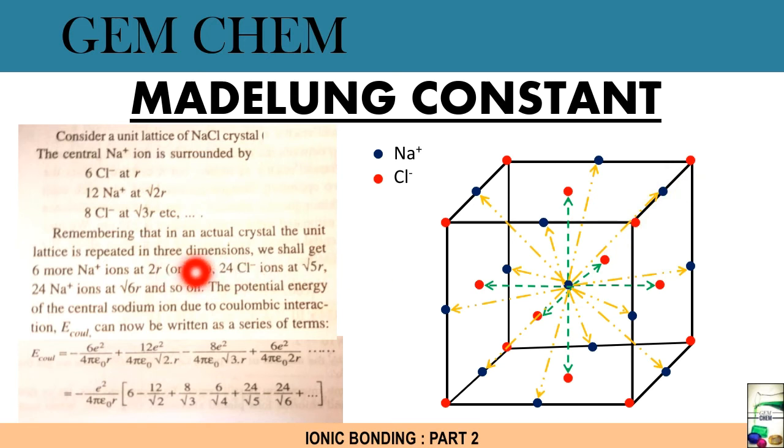Remembering that in actual crystal, the unit lattice is repeated in three dimensions, we shall get 6 more Na⁺ ions at 2R, that is √4 R. This continues. And 24 Cl⁻ ions at √5 R, and 24 Na⁺ ions at √6 R, and so on.